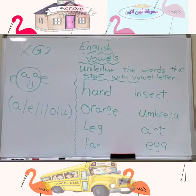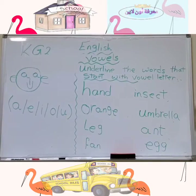So, how many vowels do we have? We have five vowels: A, E, I, O, and U.